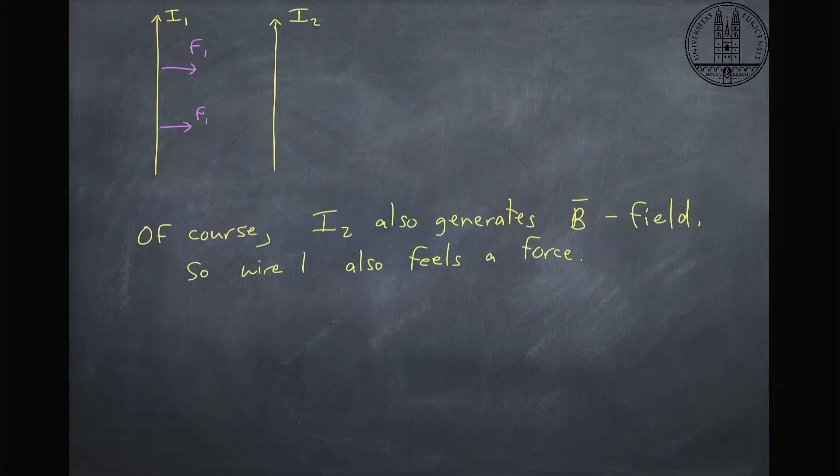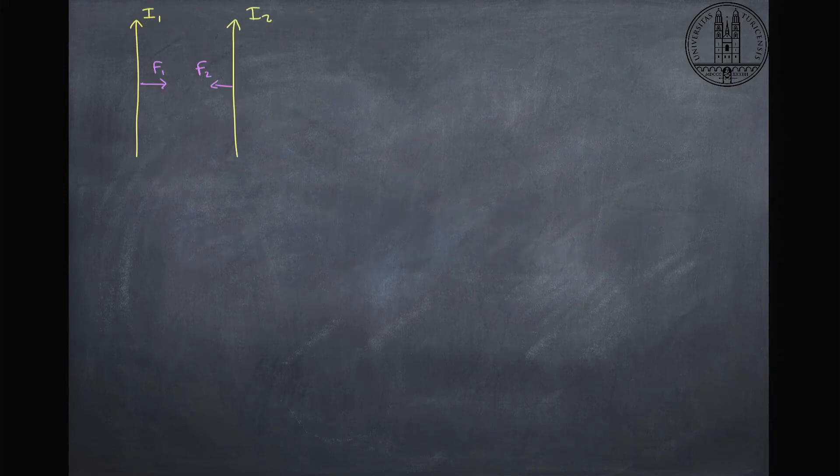Of course, I2 is also generating a magnetic field, and so wire 1 will feel an equal and opposite force. We would expect wire 1 to feel a force, wire 2 to feel a force, and they're both toward each other. This is what we would expect.